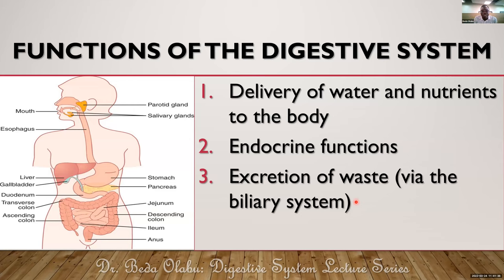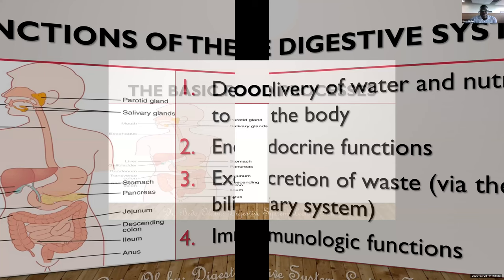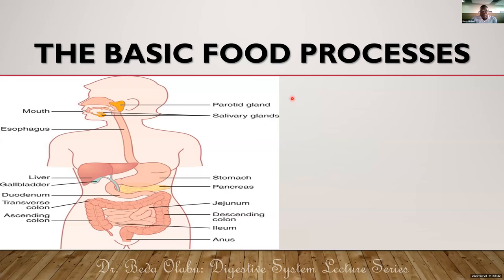The digestive system also helps excrete waste products, especially through the biliary system — for example, bilirubin from broken-down red blood cells is largely excreted via the biliary system. Lastly, it has immunological functions: stomach acidity kills germs, and mucosa-associated lymphatic tissue (MALT) along the GIT wall helps fight infections.